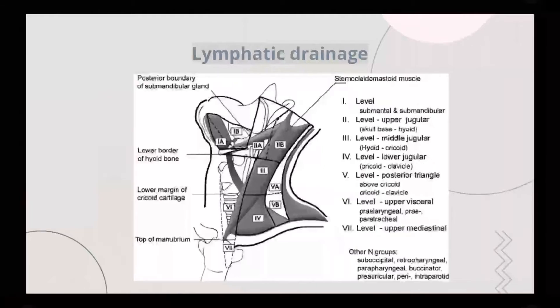Moving on to lymphatic drainage. The lymphatic drainage of the head and neck is subdivided into multiple levels. This classification helps with cancer staging, understanding cancer progression, planning neck dissection, and identifying where the pathology occurred. Each area has its own special level. For example, the lips drain into level 1 — submental and sub-mandibular. The tip of the tongue drains to submental and jugulodigastric nodes. The lateral tongue drains to sub-mandibular and deep cervical nodes.